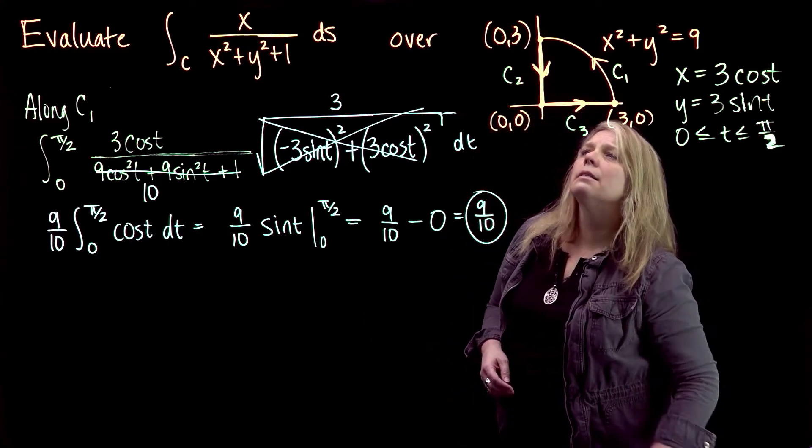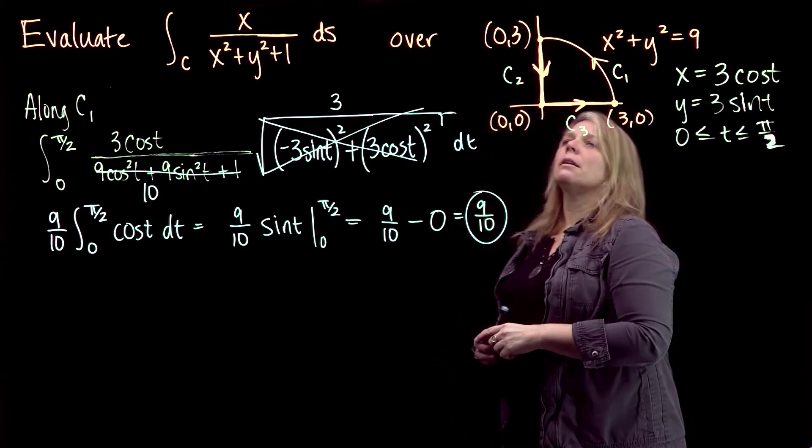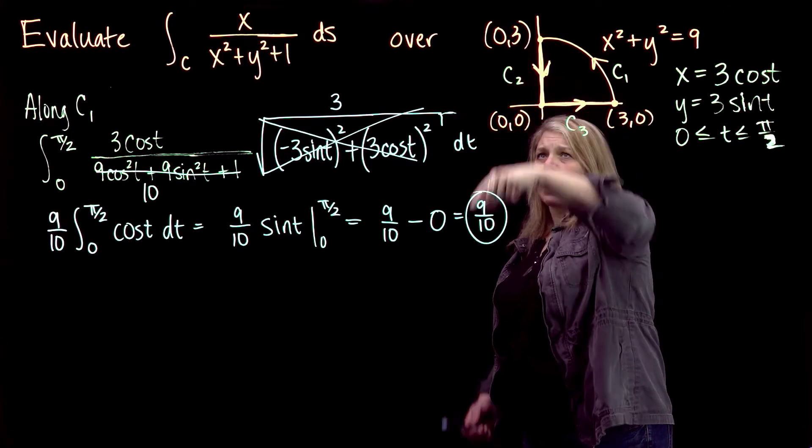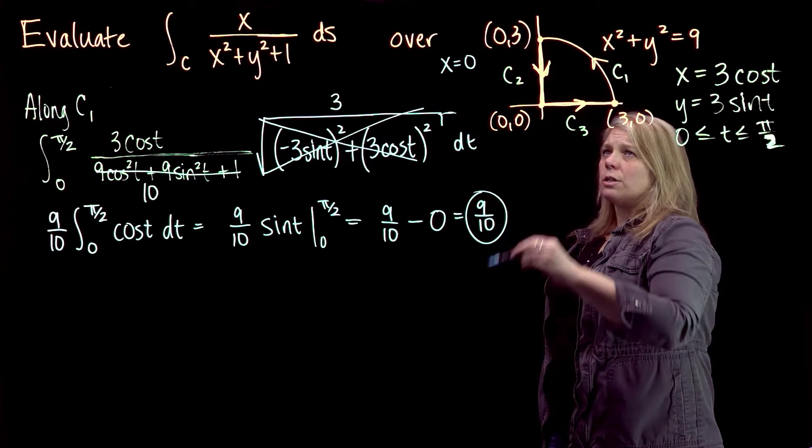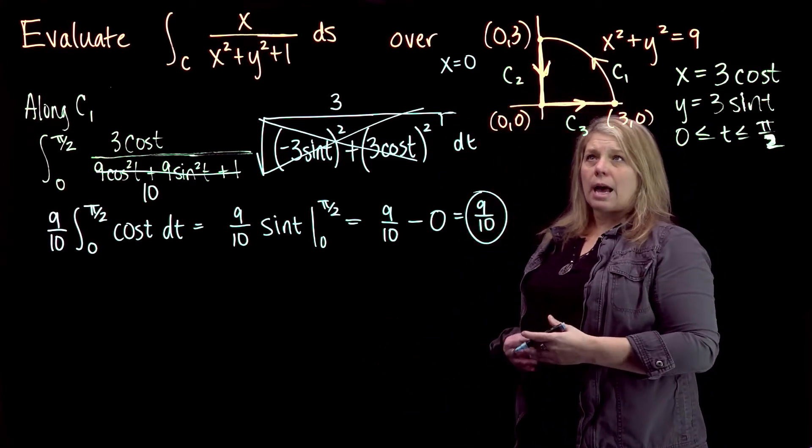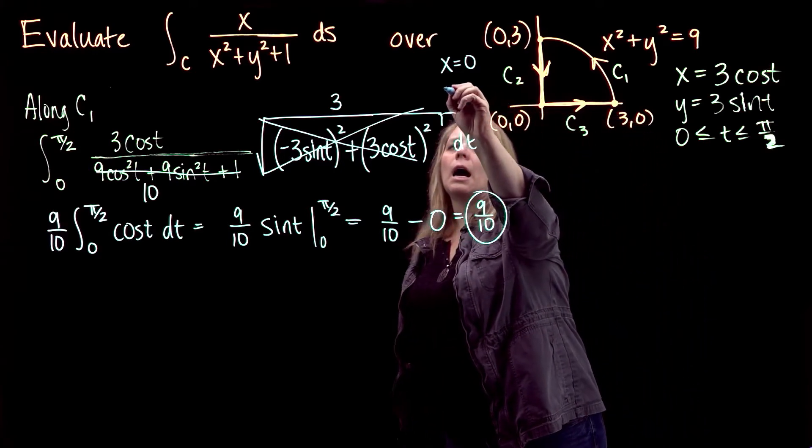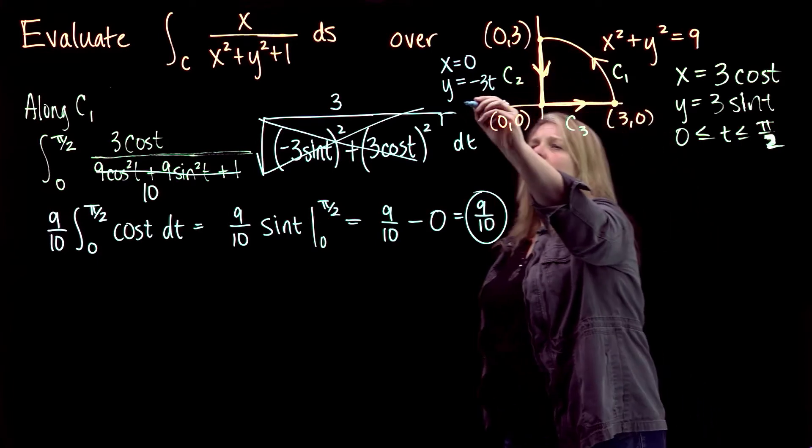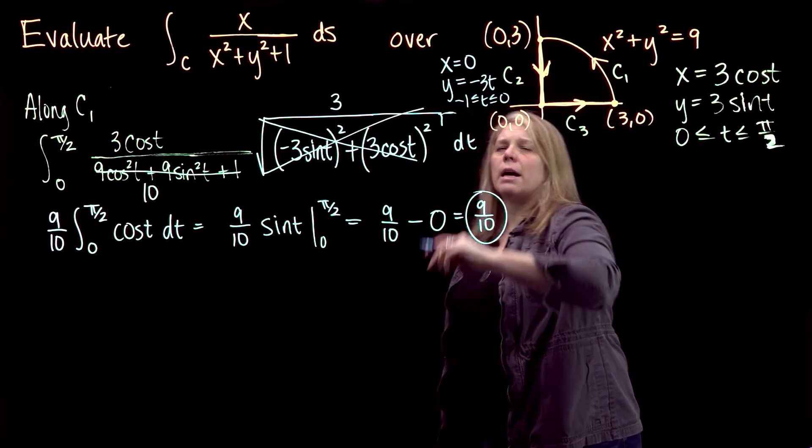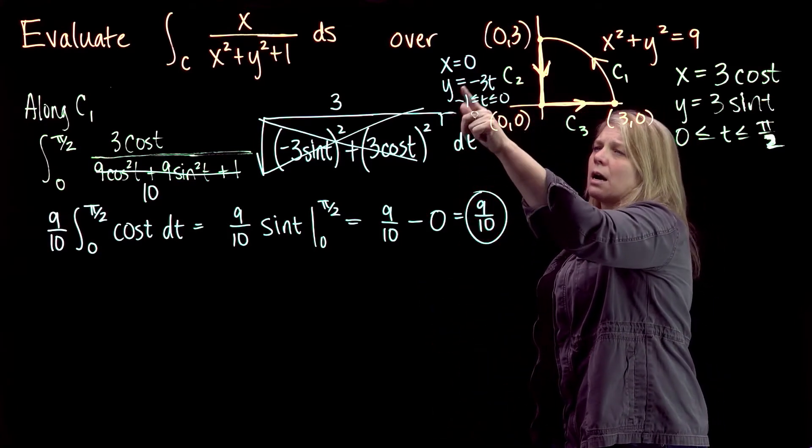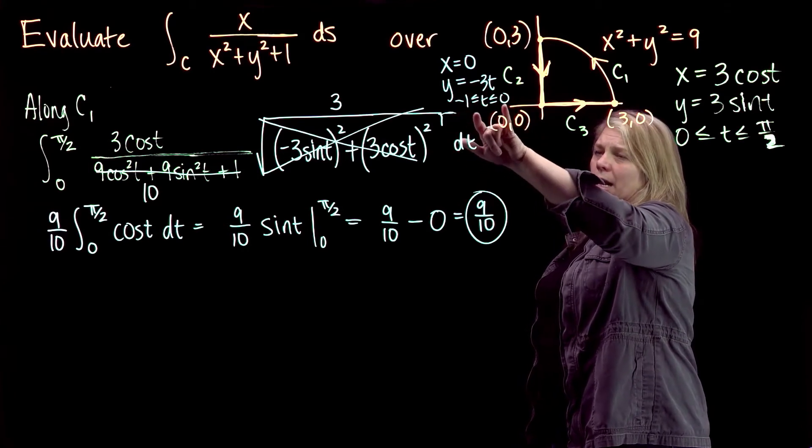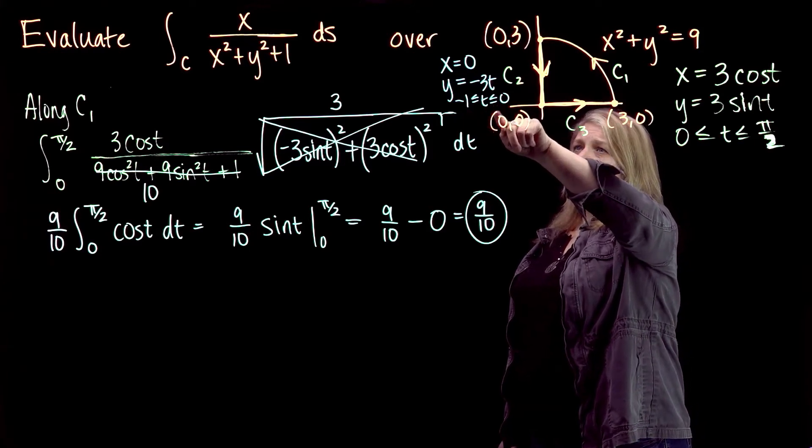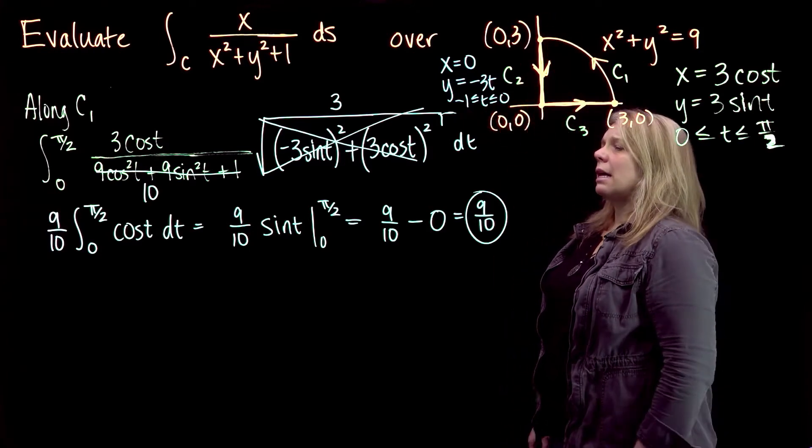Let's look at C2. C2 is a line segment. I need a parametrization for that line segment. You might notice that x stays the same along that line segment, x stays 0, and y changes from 3 to 0. I'm going to let y equals negative 3t, and then t will go from negative 1 to 0 along that curve. I did use a vector, but I didn't want a constant term to deal with. You can check that when t is negative 1, I'm at the point (0,3), and when t grows to 0, I'm at this point here.